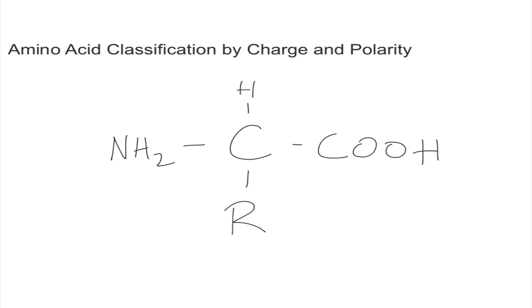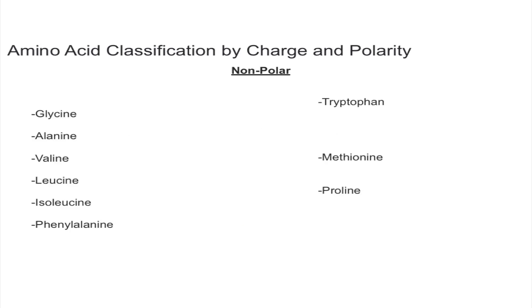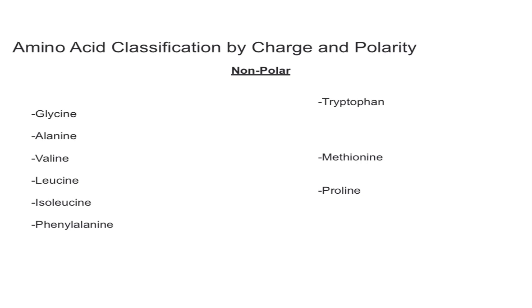So let's start with the non-polar amino acids. There are nine different non-polar amino acids. I'd like to clarify that this video's main purpose is to classify amino acids — I will give you some tips on how to learn and memorize them, but the main purpose is classification. For each amino acid I will give you the three-letter abbreviation and the one-letter abbreviation.